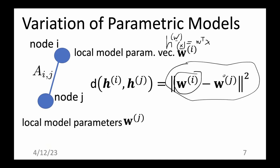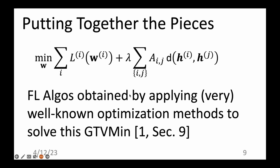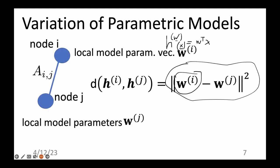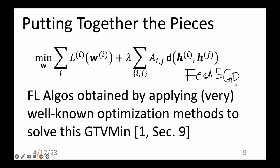The squared norm of the parameter vector differences allows you to compute gradients of the discrepancy function. We used this in the previous exercise with federated stochastic gradient descent to solve the GTV minimization problem. So one choice for your project is to use this discrepancy measure and apply federated stochastic gradient descent to solve the GTV minimization problem.